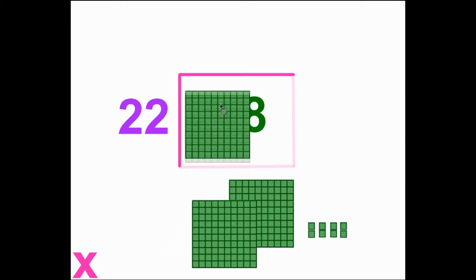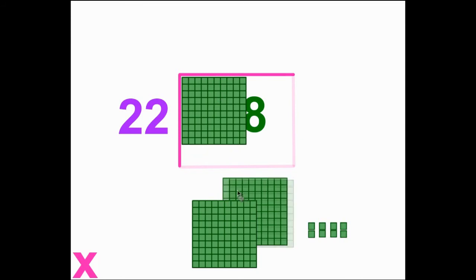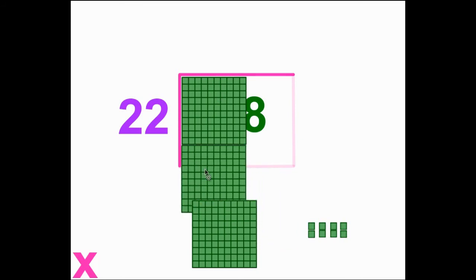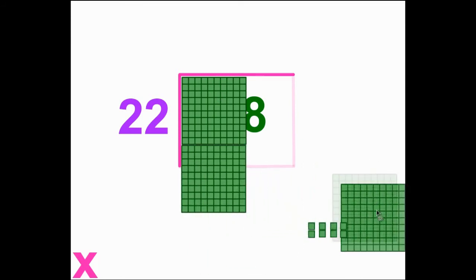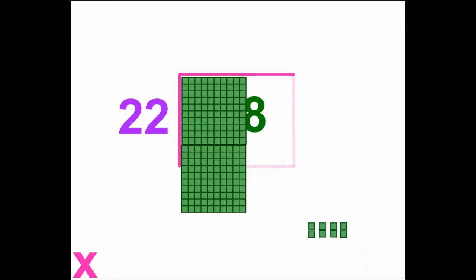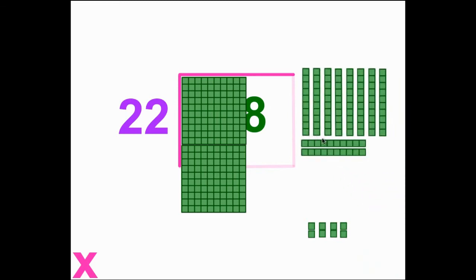Let's start building. Using the largest blocks first, create a rectangle that is 22 blocks tall. Since we're unable to make it 22 tall, we will have to make an equal exchange of 100 square for 10 tens.